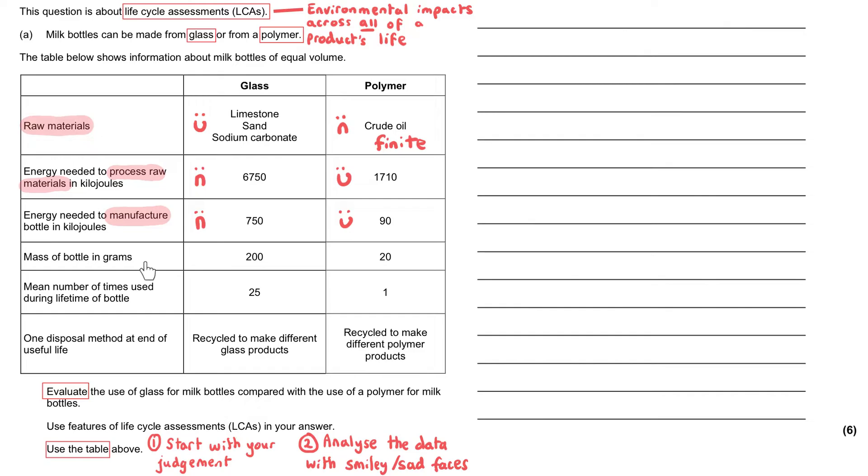The mass of the bottle in grams. It's not obvious why that matters, but the fact that the glass is heavier is definitely worse for the environment because that will impact on the energy resources needed to transport the bottles. The mean number of times this can be used, well the glass wins this contest because it can be used 25 times compared to the polymer's only once.